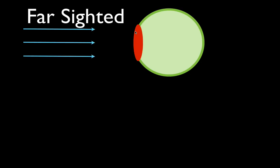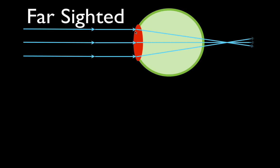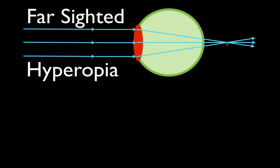The lens in your eye is a converging lens. When you're farsighted, light comes towards your eye, strikes the lens, and because it passes through that convex converging lens it is converged — but it is converged too far away. It is converged behind the retina. Farsighted means too far away.